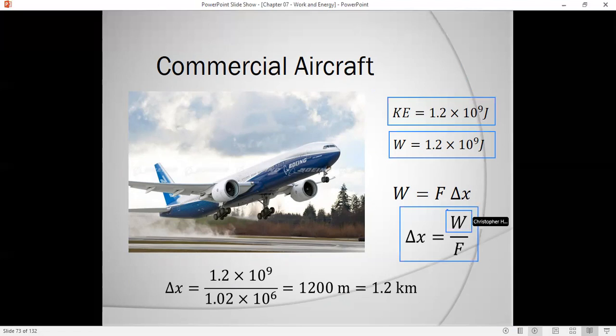We know the force of the engines and we want to solve for our displacement. How much work divided by how much thrust? So 1.2 times 10 to the 9 divided by 1.02 times 10 to the 6 means that it needs a staggering 1,200 meters or 1.2 kilometers in order to take off. Is that reasonable? That's really long, that's almost a mile long runway.